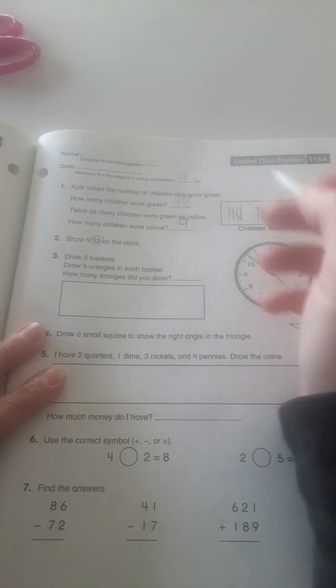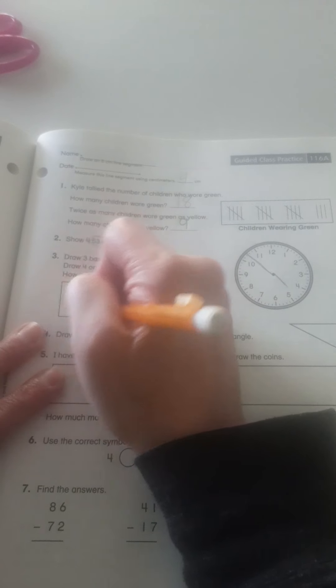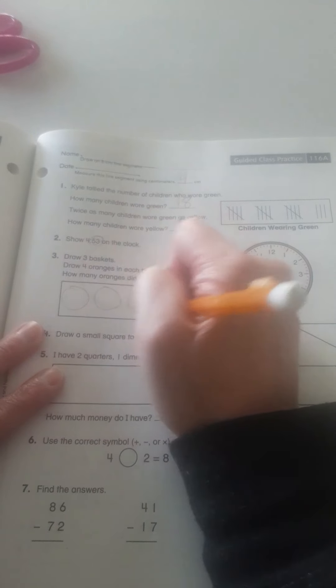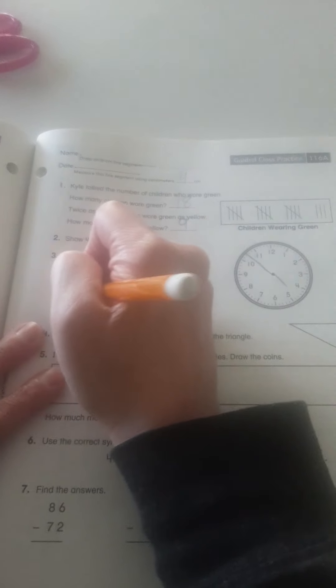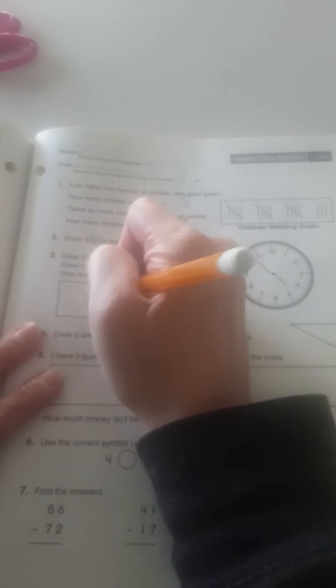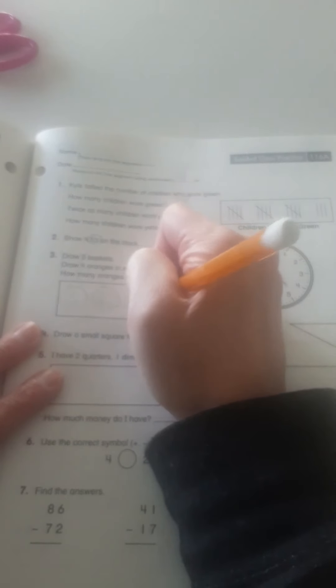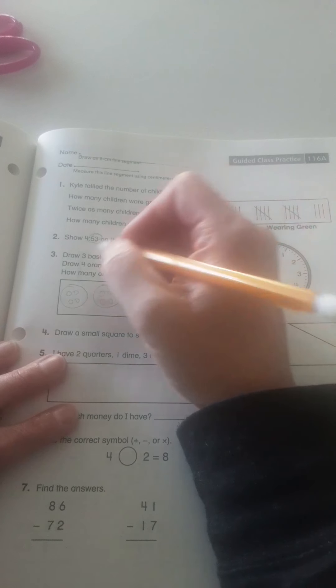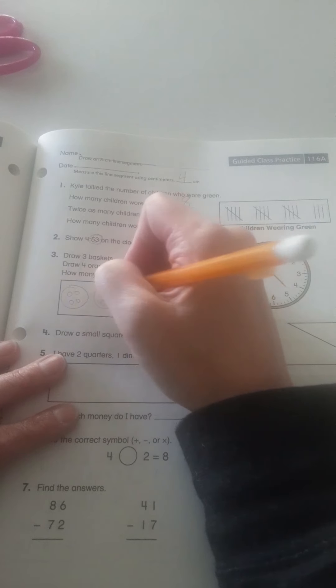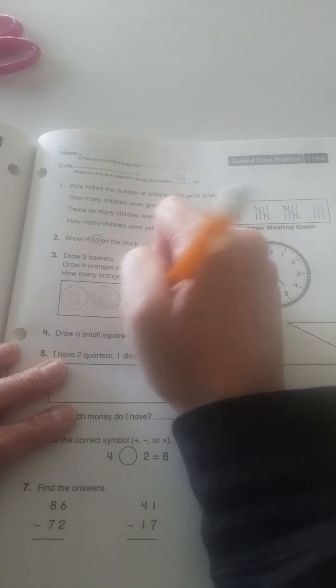Number 3. Draw 3 baskets. 1, 2, 3. Draw 4 oranges in each basket. Here are my 4 oranges. And how many oranges did you draw? 4, 5, 6, 7, 8, 9, 10, 11, 12.